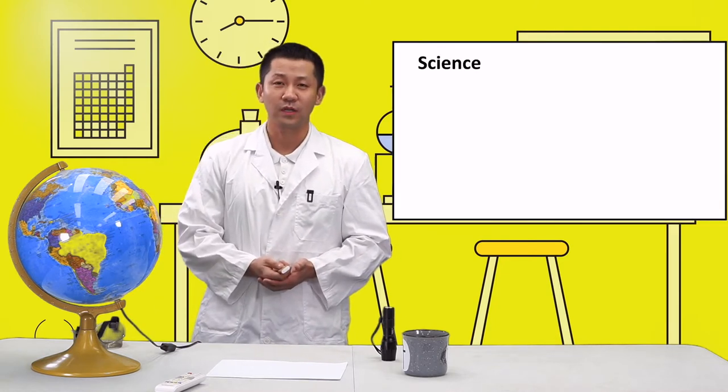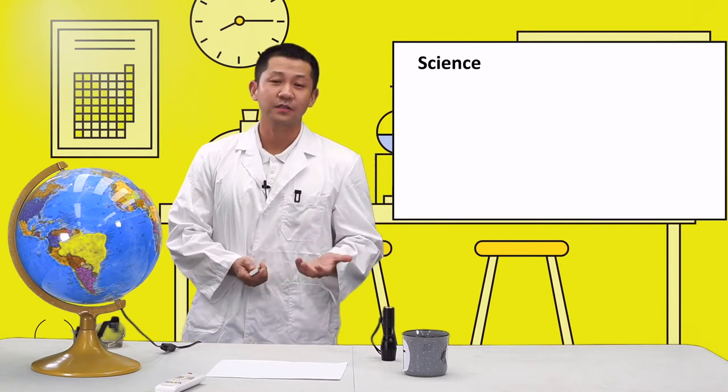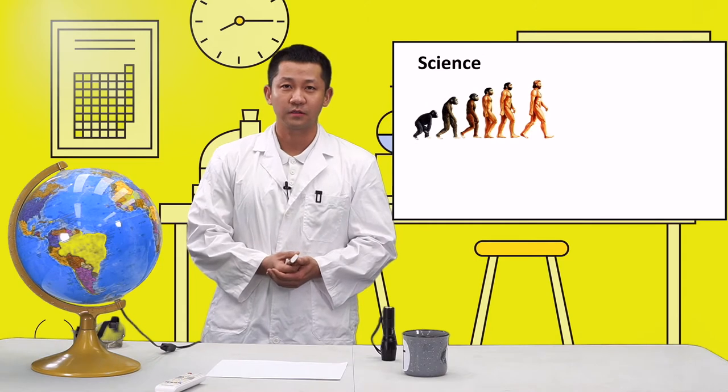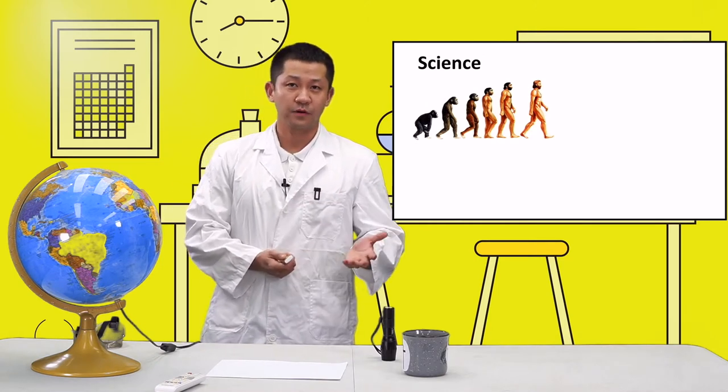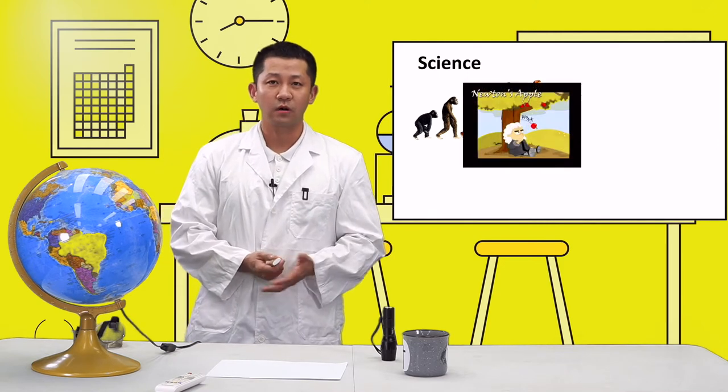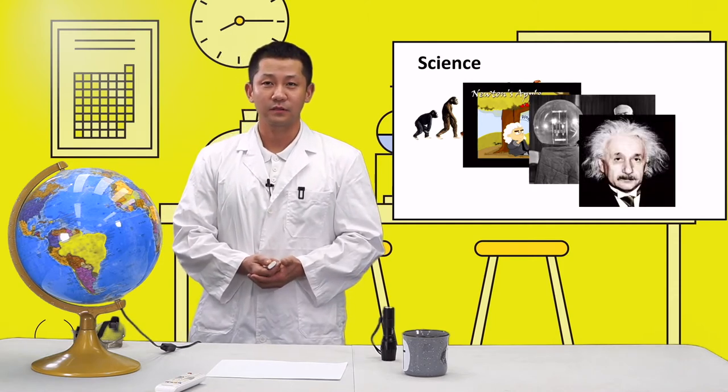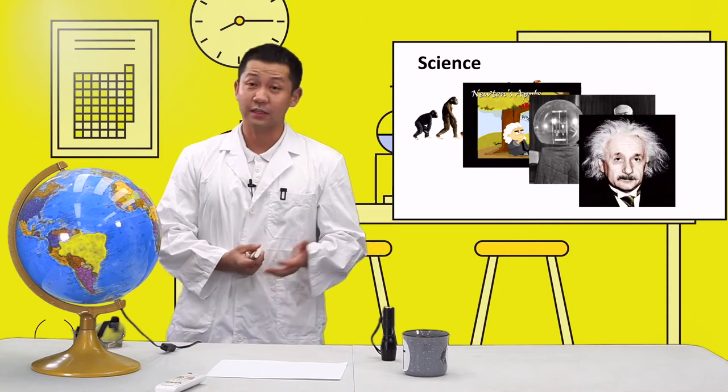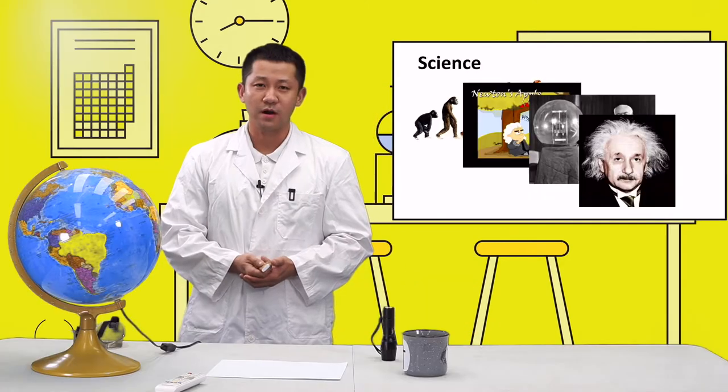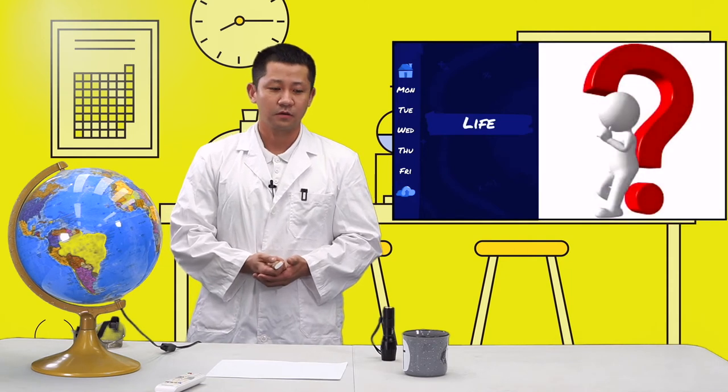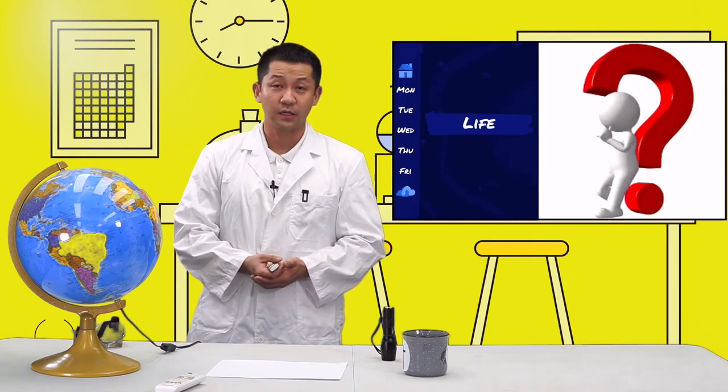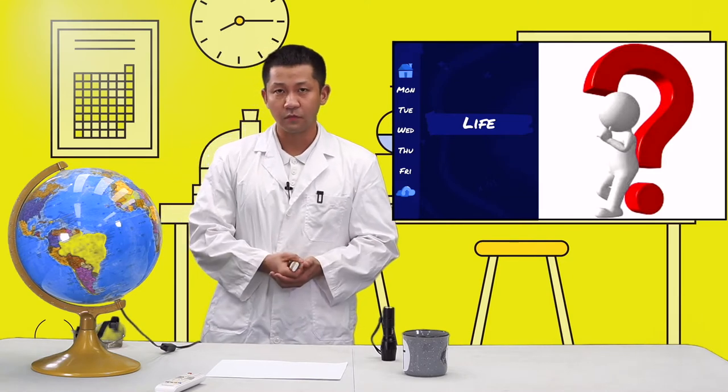When I was a student, when we talk about science we always think about the theory of evolution, or Newton, or Thomas Edison, or Albert Einstein. Through learning science I always think about what is life, because according to Darwin we're just a type of living organism and then die and then it's gone. So that makes me think about what life is.